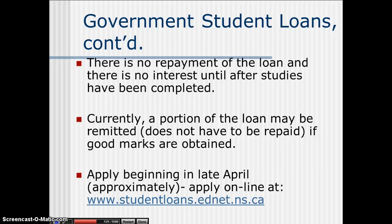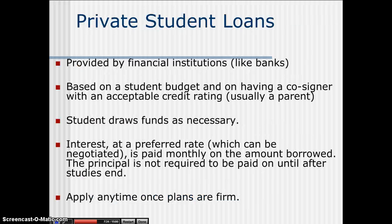When you apply, the application is usually updated on the studentloans.ednet.ns.ca website around late April. The other loan option is a private student loan, provided by financial institutions like banks. They're based on a student budget and on having a cosigner with an acceptable credit rating — usually a parent. A cosigner accepts responsibility if a student defaults on a loan. When you take out a private loan, you draw funds as necessary and it works like a credit card, so you want to be careful with spending because you pay interest on that amount every month. On a private loan you pay regular interest, and you don't have to pay on the principal amount until after your studies end, but it is advisable to make regular payments as often as possible.